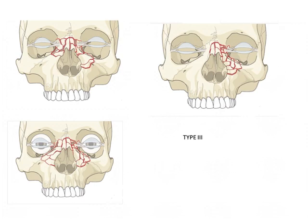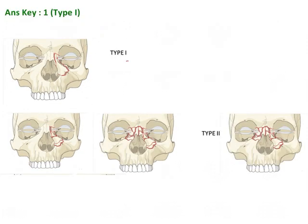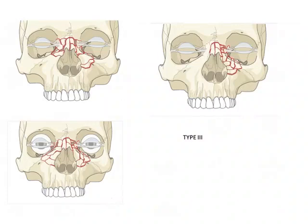These are examples of type 3, type 2, and type 1 fractures. One important thing to remember is that all three types — type 1, type 2, and type 3 — can be either unilateral or bilateral.